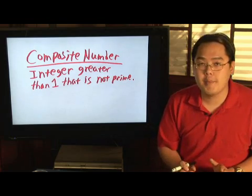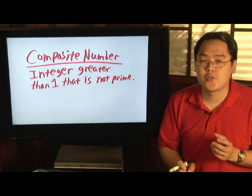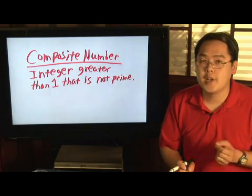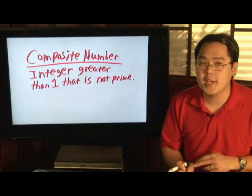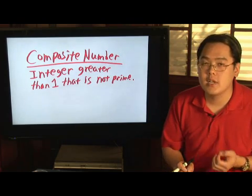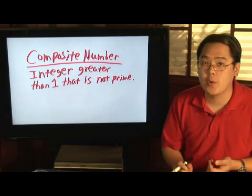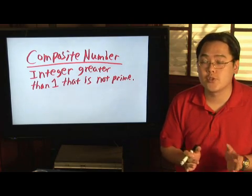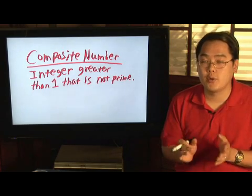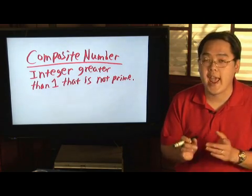Now, remember a prime number is a number whose factors are one and itself. Numbers like two, three, five, seven, and eleven—and I can keep going—are examples of prime numbers because those numbers I just mentioned, the only numbers that will go into it are one and themselves.